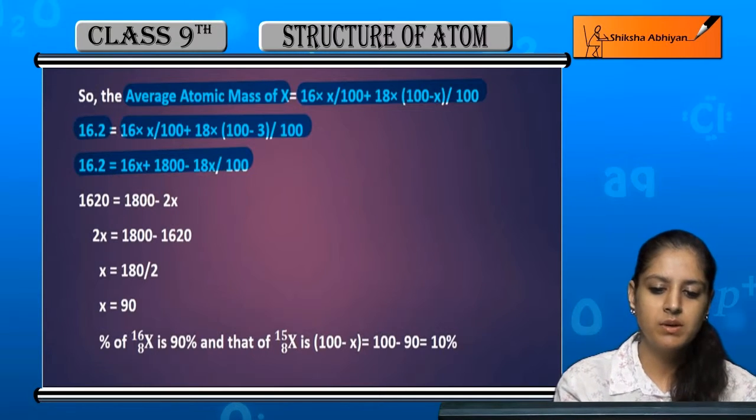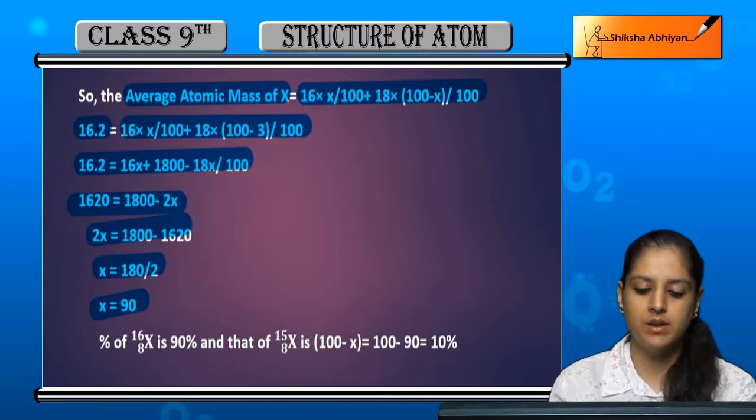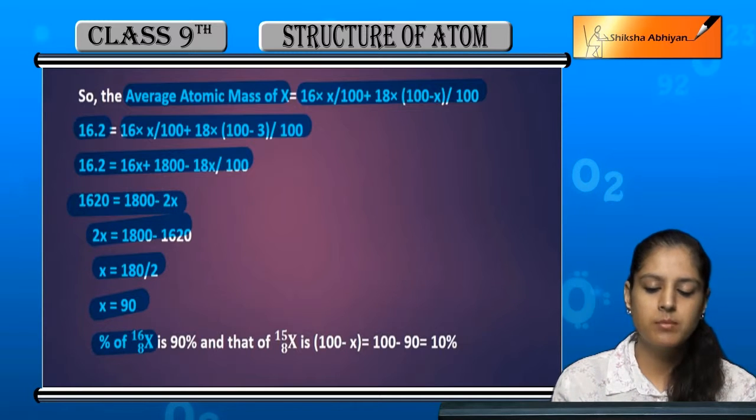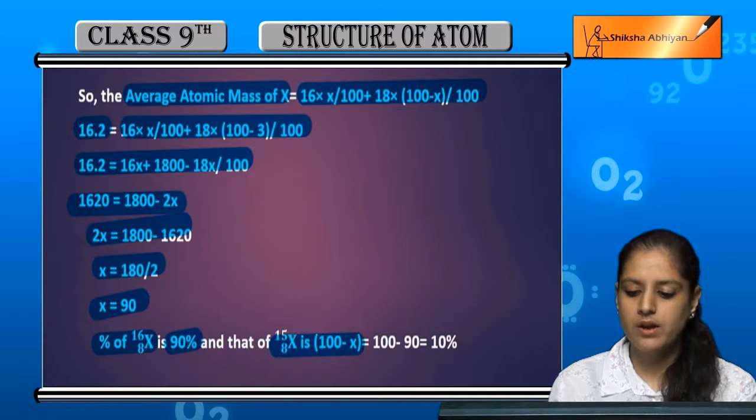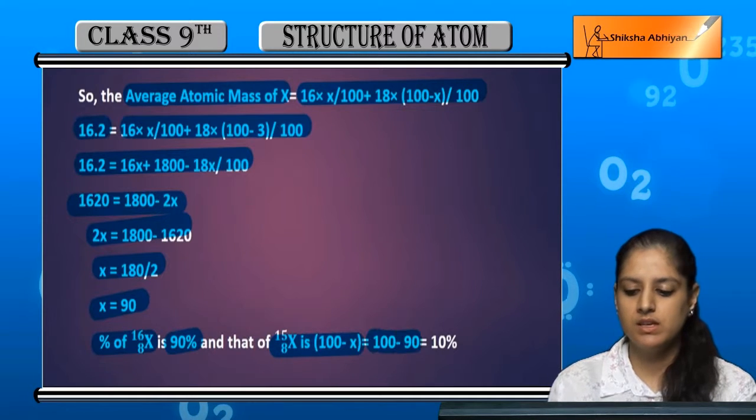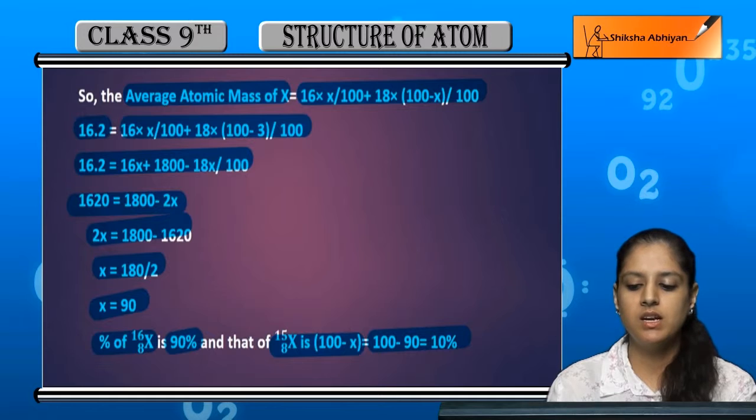Divide and multiply by 100 and we get the value of x as 90. The percentage of the first isotope is 90% and the value of the second one is 100 minus 90, which is 10%.